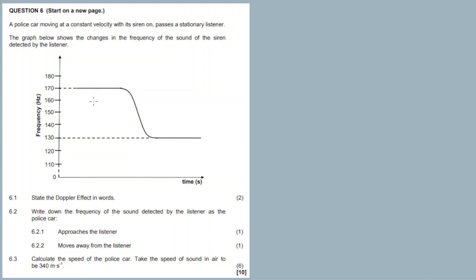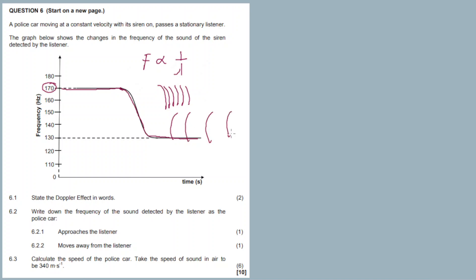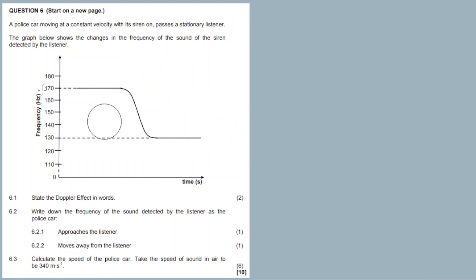As the police car approaches, the frequency of the sound is constant at 170 Hz. Then it moves away, and when it moves away the frequency decreases. Frequency is inversely proportional to wavelength — as it approaches, the wavelength is smaller but the frequency is higher; as it moves away, the wavelength becomes bigger while the frequency decreases.